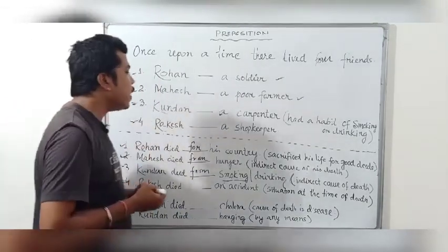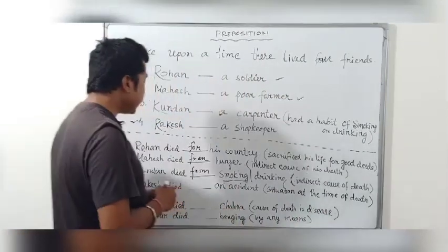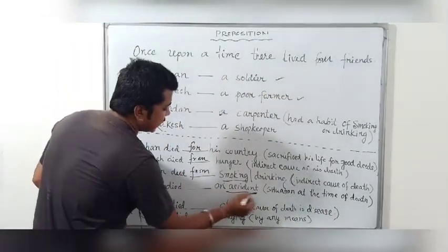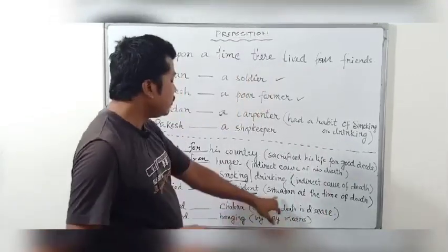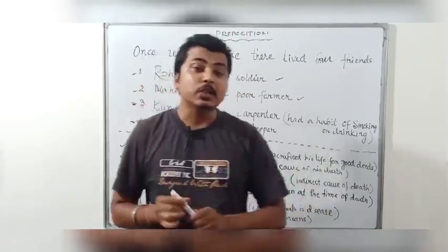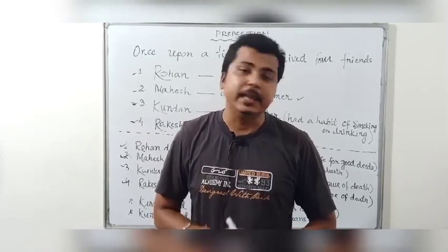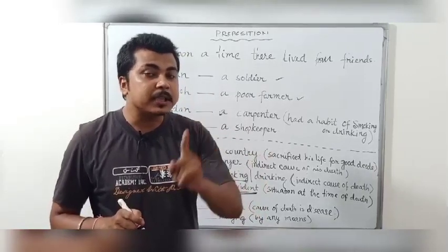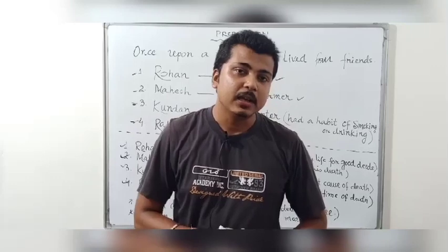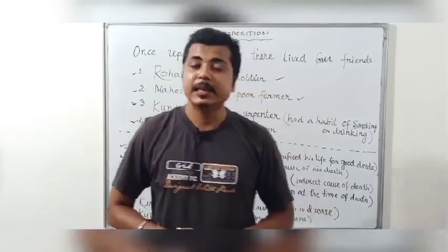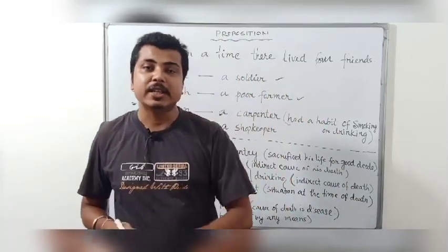Next, number four — Rakesh, who was a shopkeeper, was going to purchase goods for his shop and died in an accident on the road, on the spot. When someone dies in an accident, that refers to the situation at the time of death, so we use the preposition 'in'. For example: Rakesh died in an accident. Another example: He died in peace — here 'in' refers to the situation at the time of death.